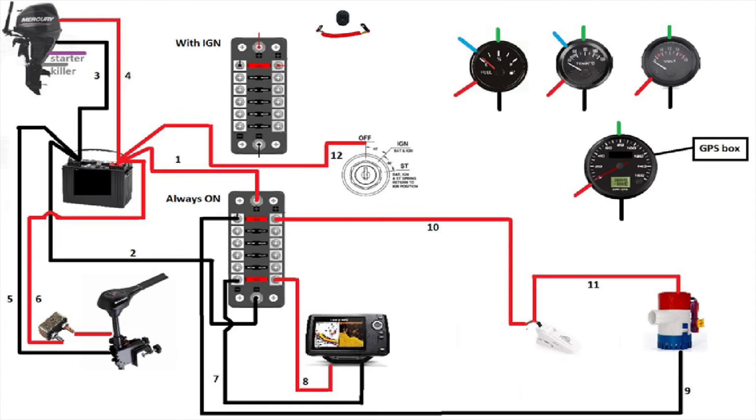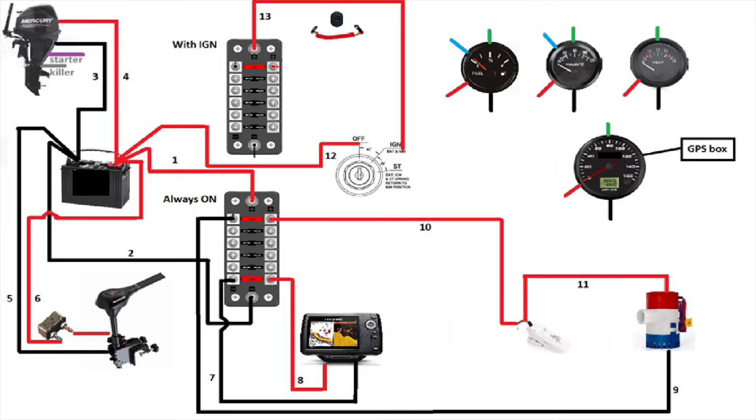Okay, we are done with whatever needs to be powered at all times except for the stern light. Now let's connect the ignition key. Connect the positive of the battery to the off position of ignition key. Now we need to connect the fuse box called with ING, which is the ignition key.